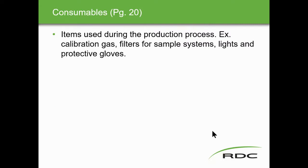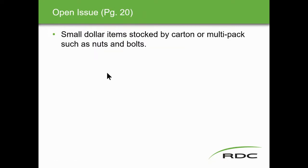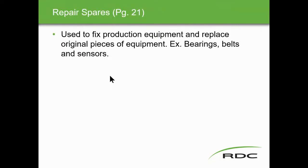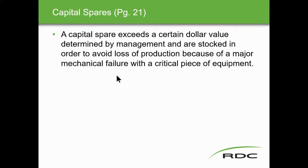Consumables are items used during the production process — for instrumentation, things like calibration gas, filters for sampling systems, lights, protective gloves, all your PPE. Open issue items are small dollar items stocked by carton or multiple packs — nuts and bolts. Repair spares are used to fix production equipment and replace original pieces — bearings, belts, and sensors. Critical capital spares are big ticket items that cost money — they exceed a certain dollar value determined by management and are stocked to avoid lost production because of major mechanical failure with a critical piece of equipment.